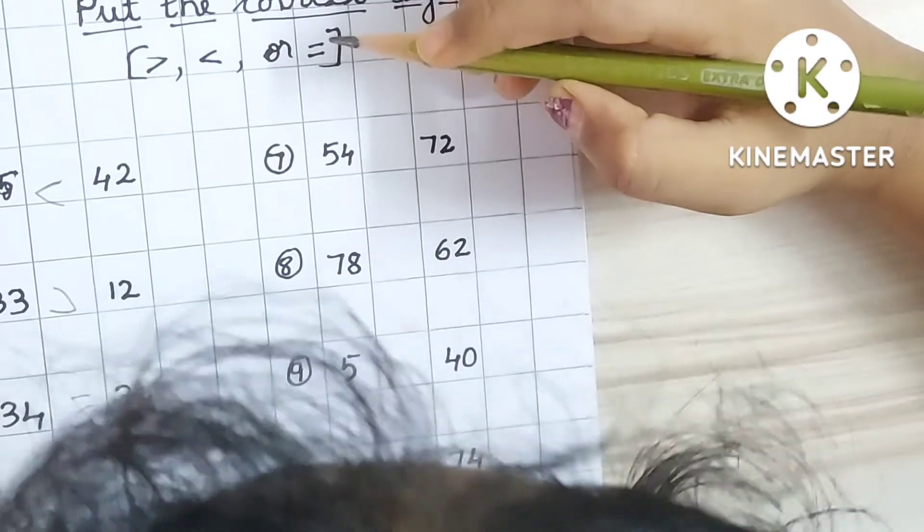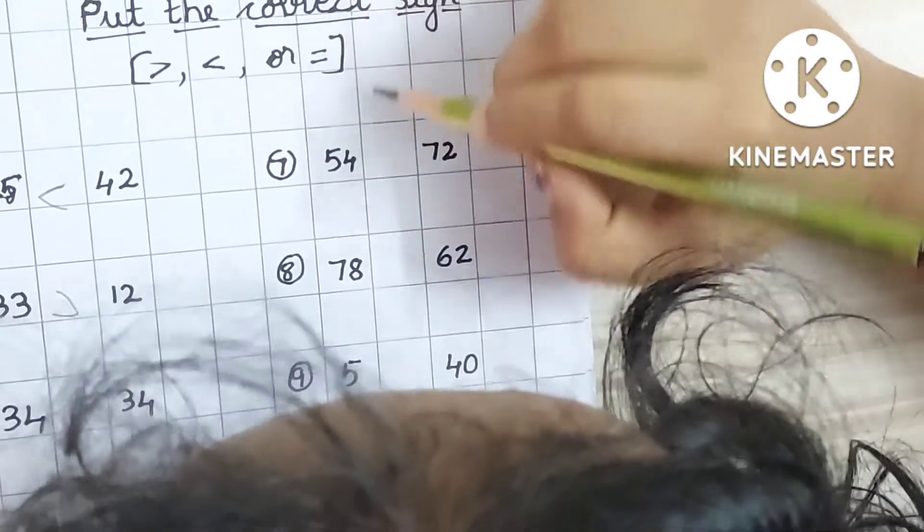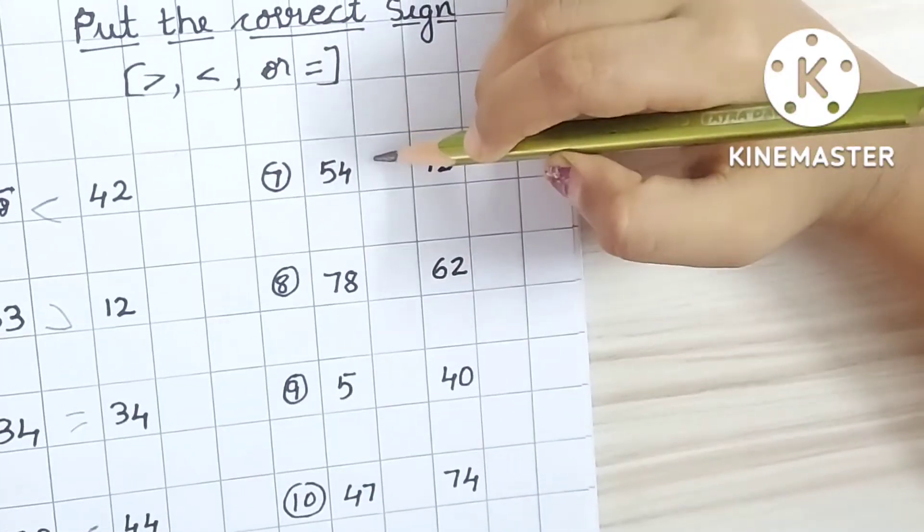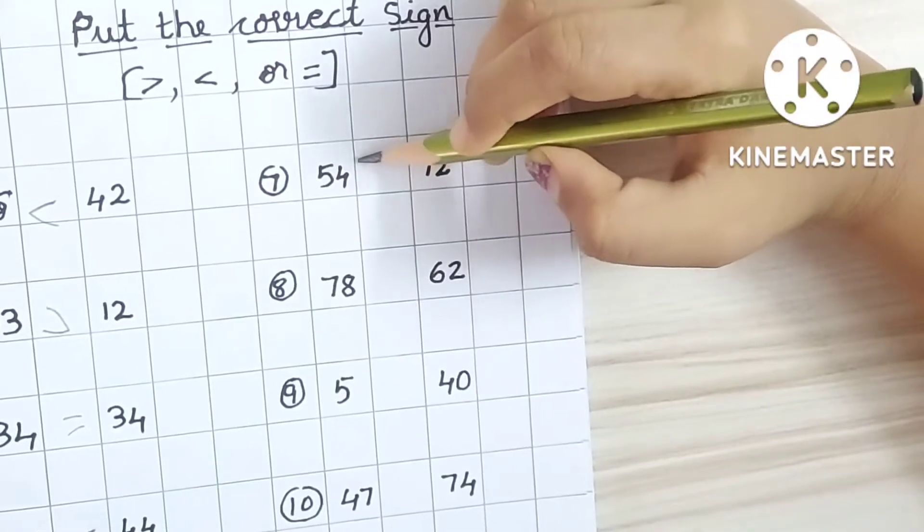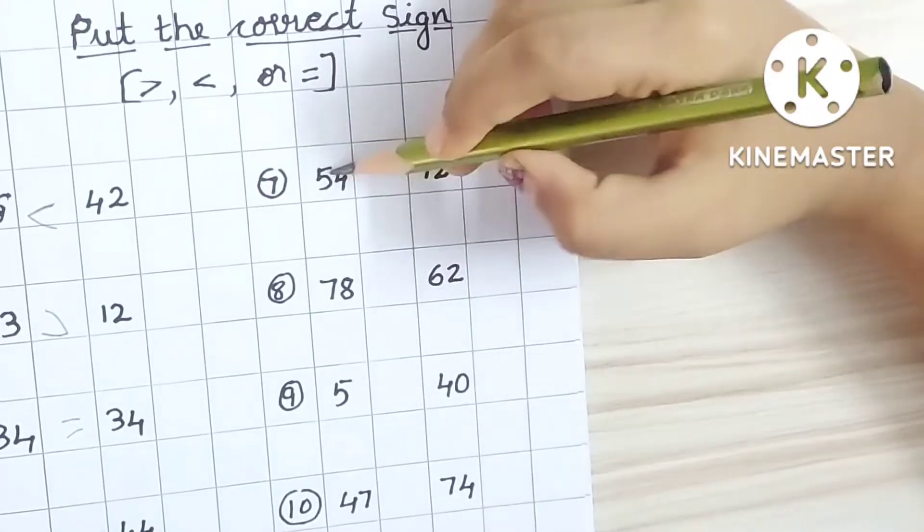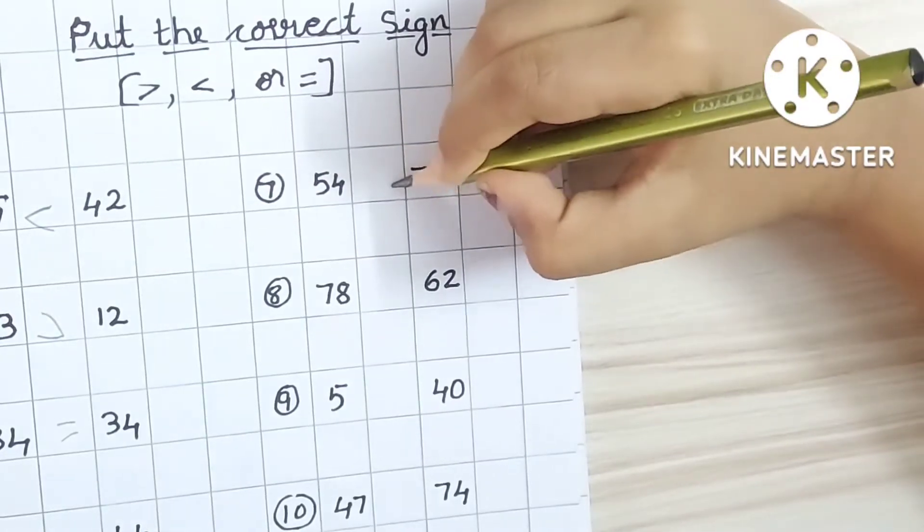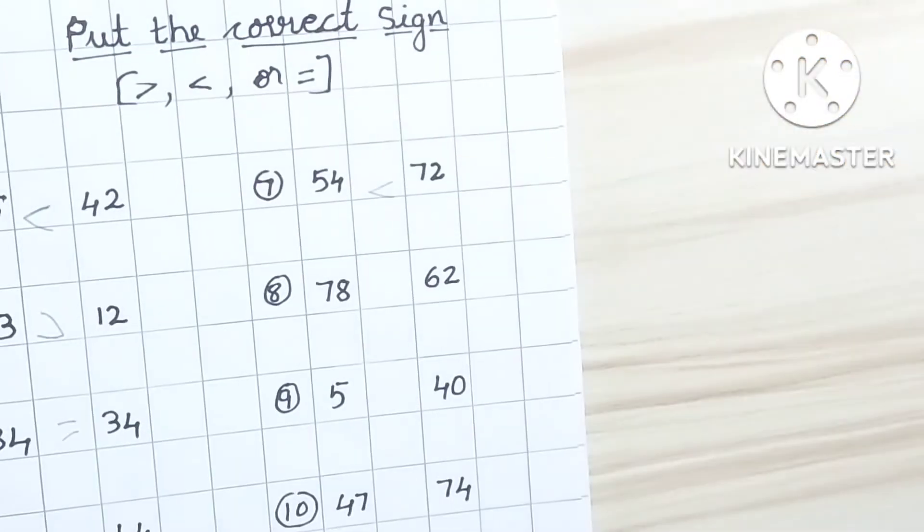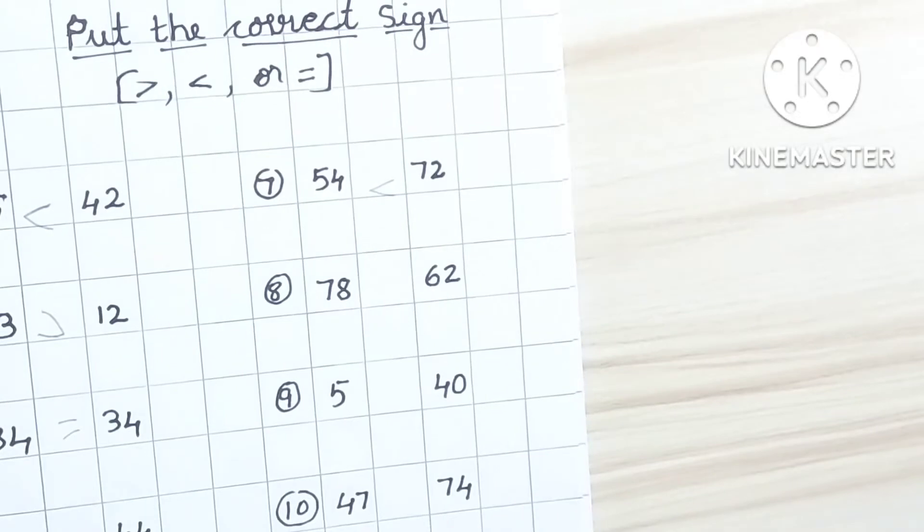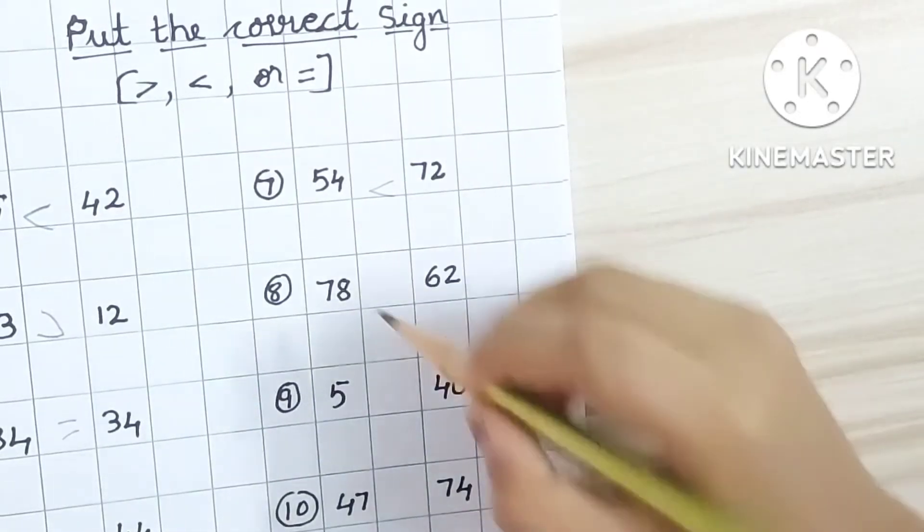Fifty-four, seventy-two. Fifty-four, seventy-two. Which one is bigger number? Yes, seventy-two. Seventy-eight, sixty-two. Seventy-eight. Yes, good.